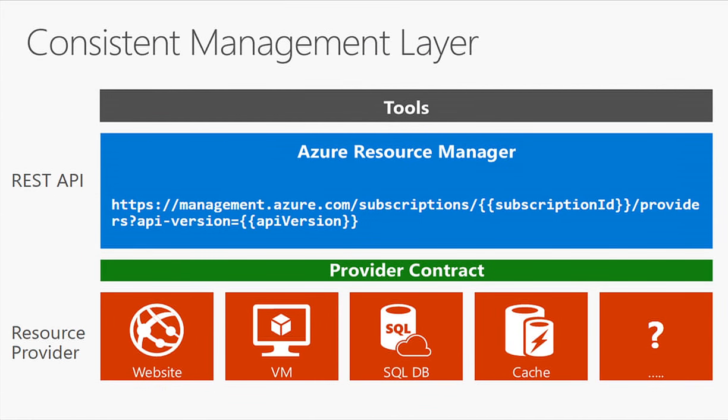From an API perspective, tooling like Visual Studio, PowerShell, and CLIs talk to the Resource Manager API. There's a provider contract each individual provider must adhere to. So when teams at Microsoft want to update features — say SQL DB — they don't have to ship into the entire legacy ASM API. They can update just their individual provider, allowing teams to deploy much faster without depending on one big ship cycle.